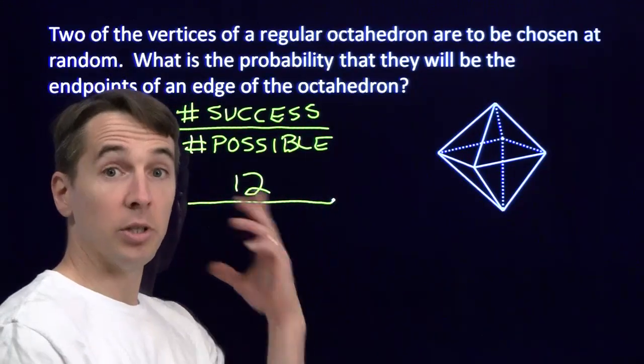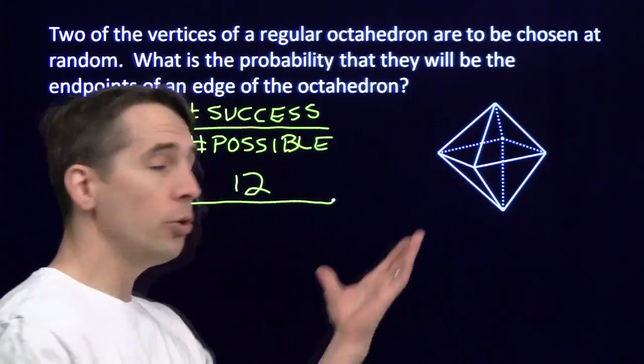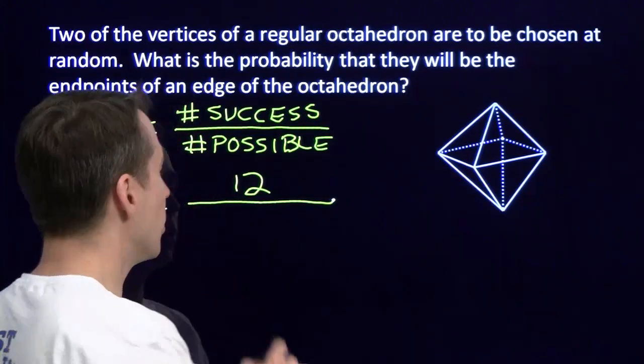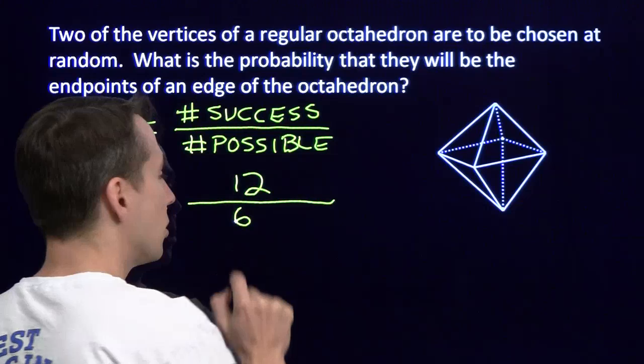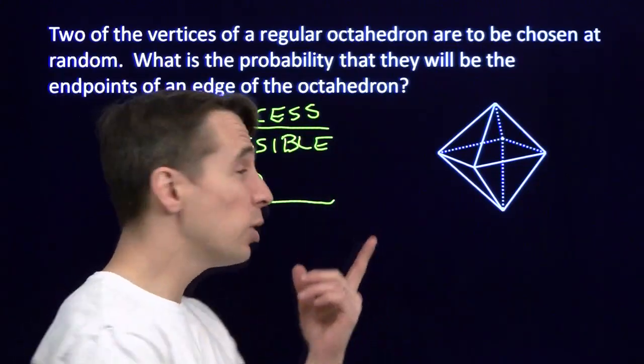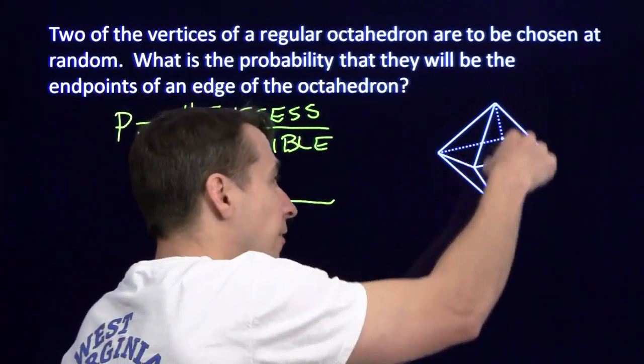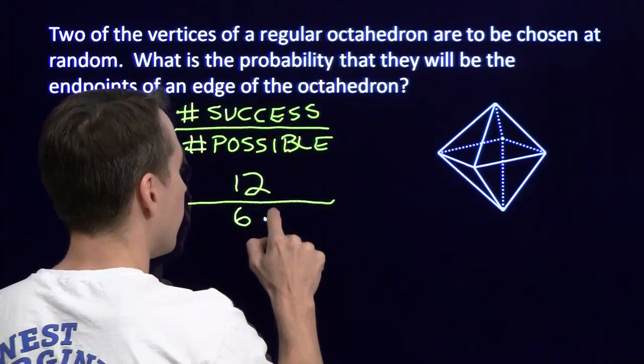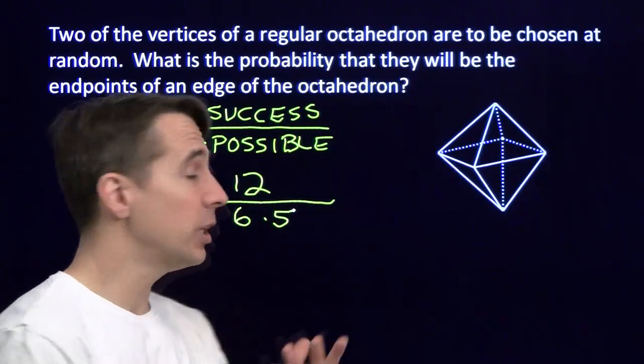Now I have to count the number of possibilities, the number of ways I can pick two of the six vertices of the octahedron. Well, there are six choices for the first vertex. Then once I've chosen one vertex, there are five choices remaining for the other vertex.